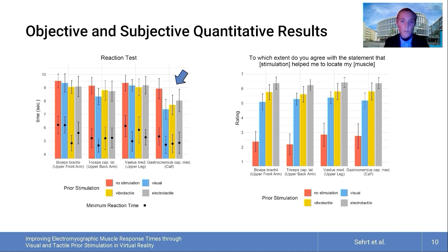The results of the subjective survey on muscle location and reaction time using a 7-point Likert scale also showed that prior stimulation with all modalities improves the localizability of the muscles, with the electrotactile modality being subjectively favored for all muscle locations, indicated by higher bars in the right graph, suggesting a greater agreement to the statement.